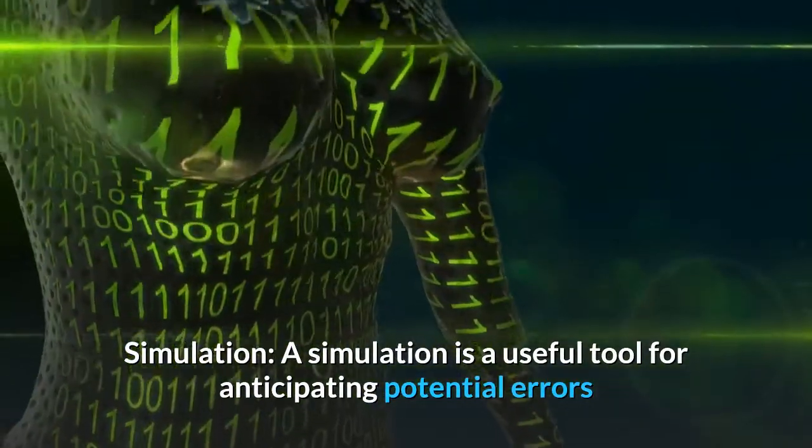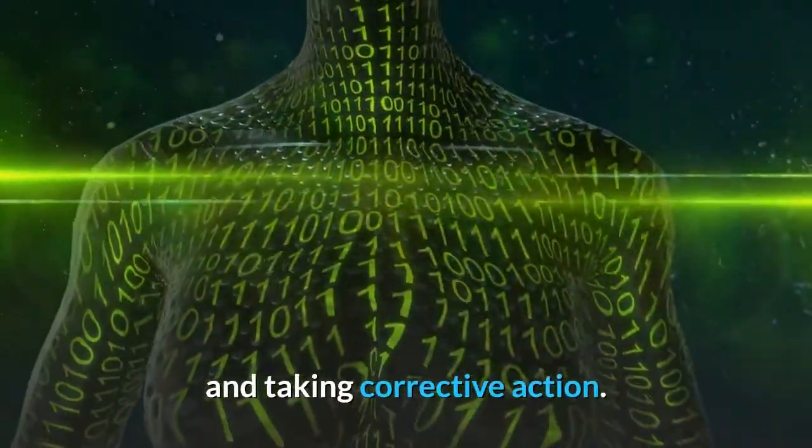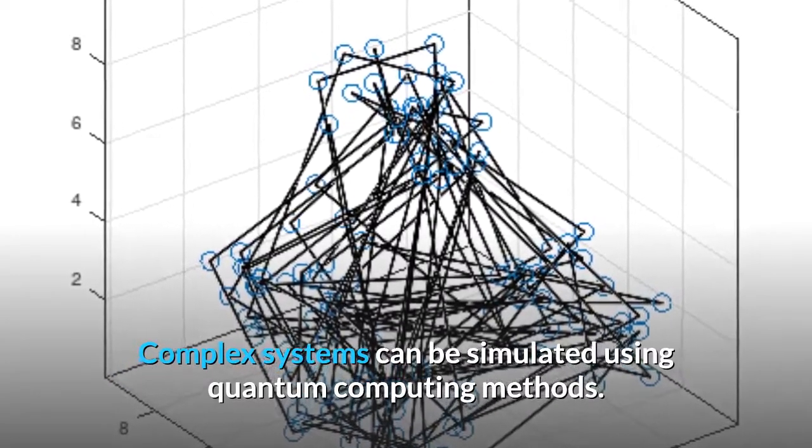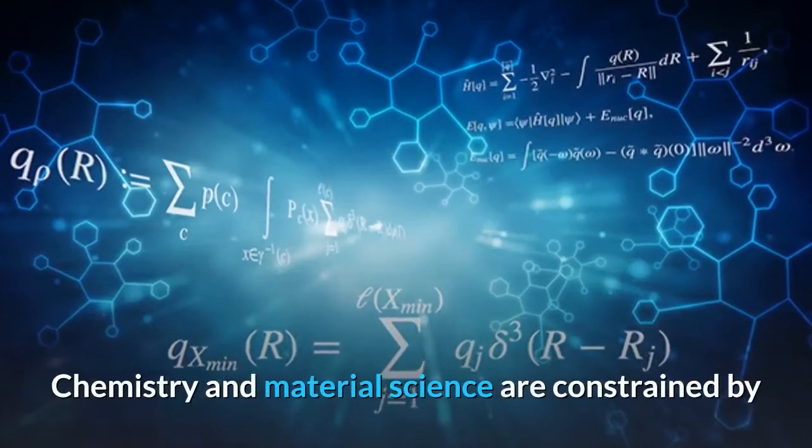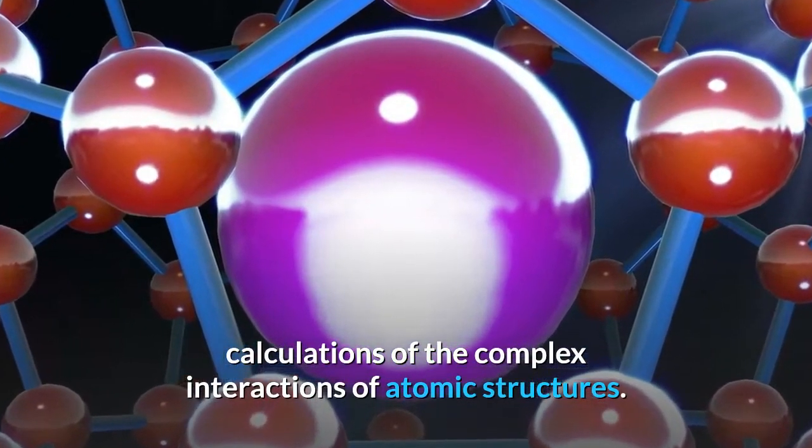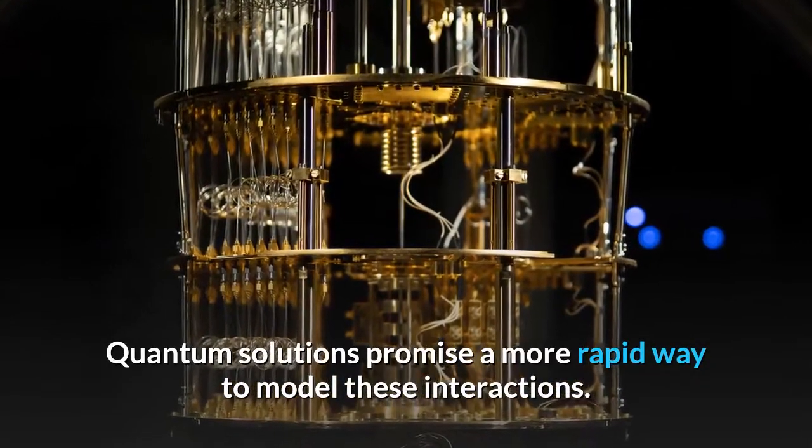Simulation. A simulation is a useful tool for anticipating potential errors and taking corrective action. Complex systems can be simulated using quantum computing methods. Chemistry and material science are constrained by calculations of the complex interactions of atomic structures. Quantum solutions promise a more rapid way to model these interactions.